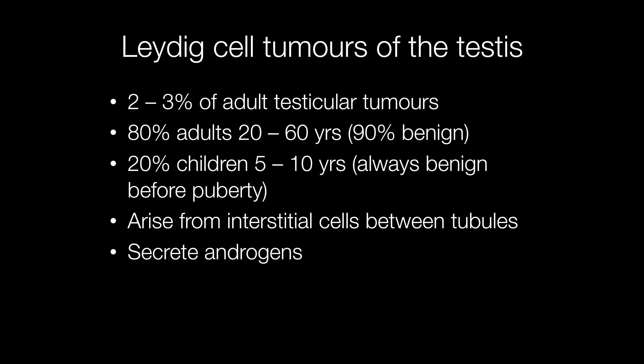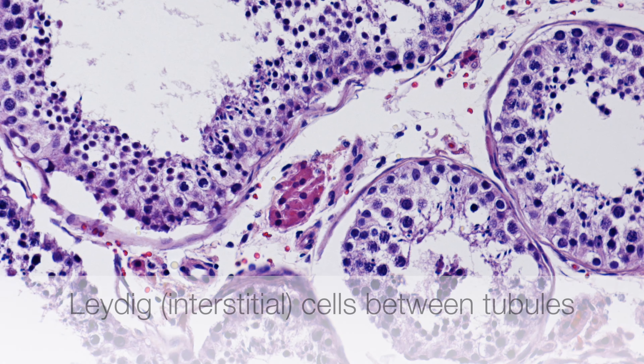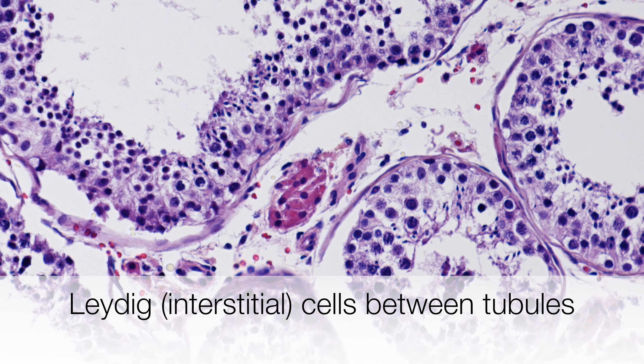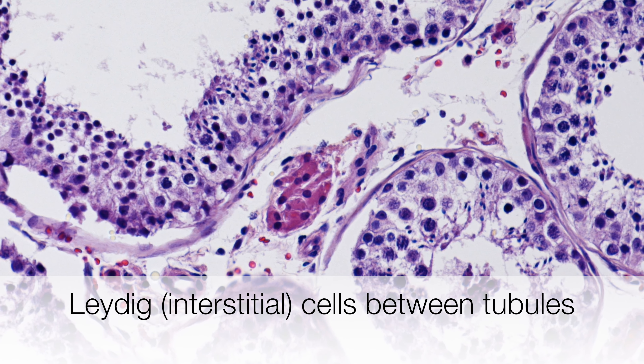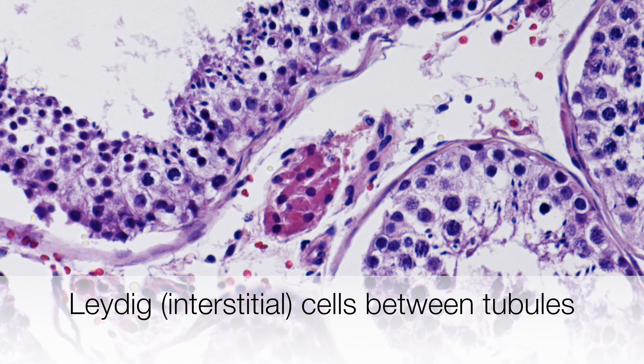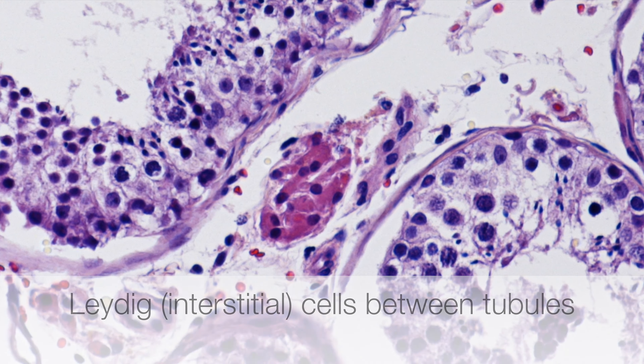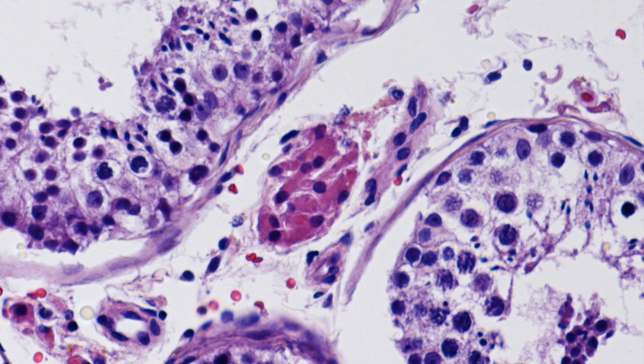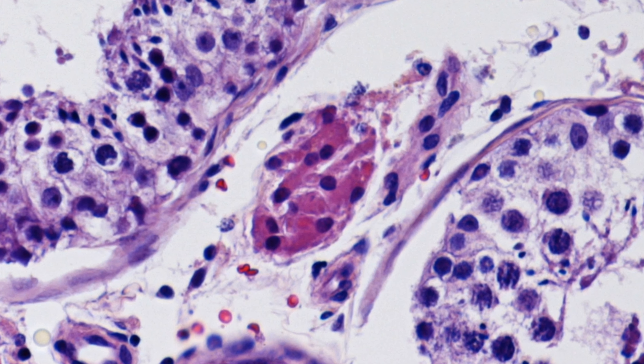Leydig cell tumours belong to the sex cord stromal group of tumours. They secrete androgens and arise from the interstitial cells between the tubules. The pink staining cells we are zooming into between the tubules are normal Leydig cells, also known as interstitial cells or interstitial cells of Leydig.